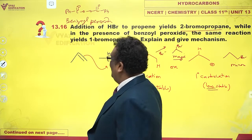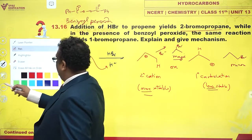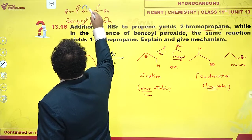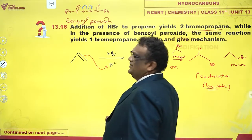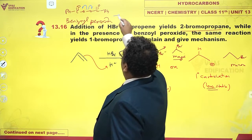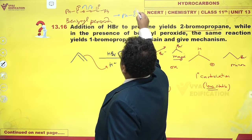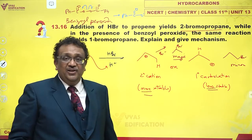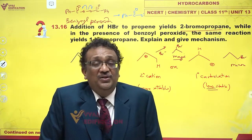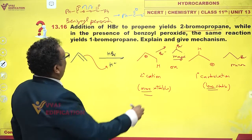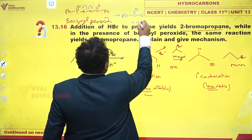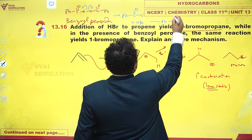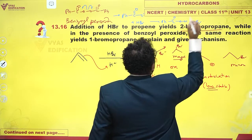And what happens? Benzoyl peroxide breaks up homolytically — I get Ph-C(=O)-O• as a free radical. And this radical can react with HBR, generating Ph-C(=O)-OH plus a Br radical.